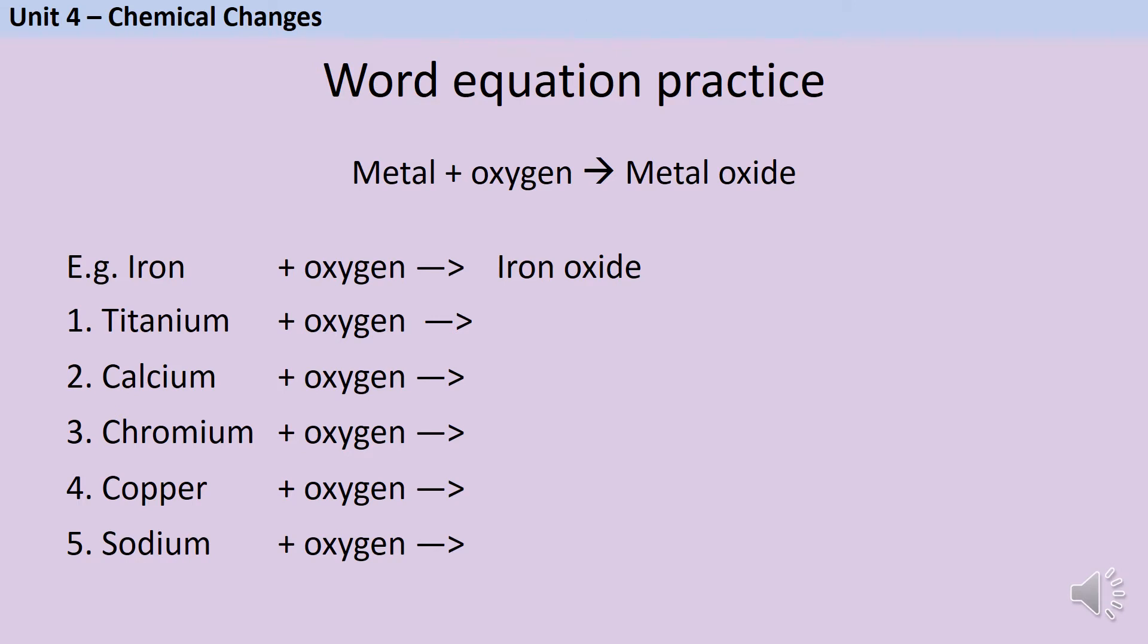If you've downloaded the worksheet from the description below, then you should now be able to fill in all of task one. For GCSE chemistry, you need to be able to write word and symbol equations for all of the reactions that are named in the specification. Let's look at the reactions of metals with oxygen. As we said earlier, this reaction makes a metal oxide. So for any named metal, the product will be that metal with oxide tagged on the end. So iron reacts with oxygen to make iron oxide.